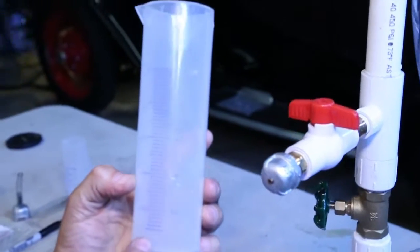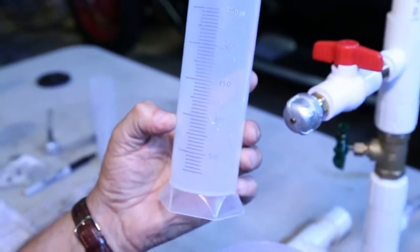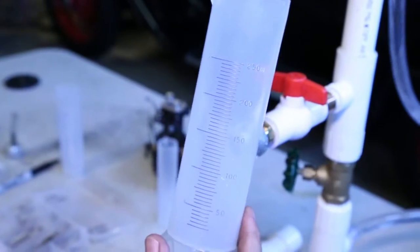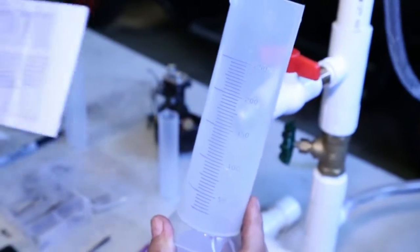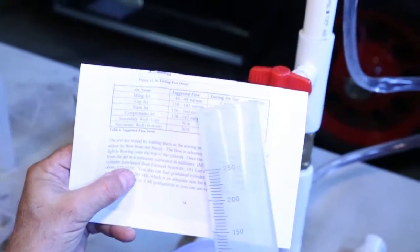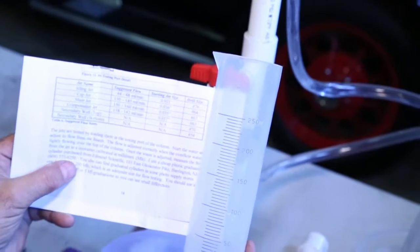Before we do that, this is a beaker. Every line in here is 5 milliliters. The goal for this test is a cap jet is supposed to flow between 150-185 milliliters in one minute.